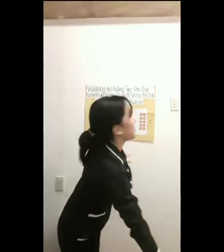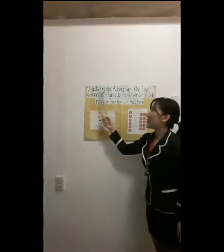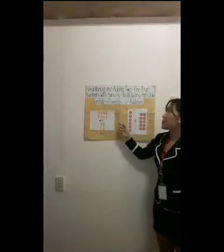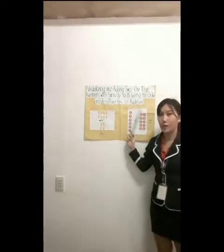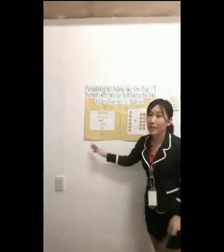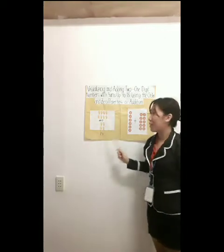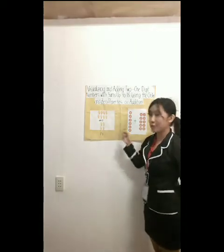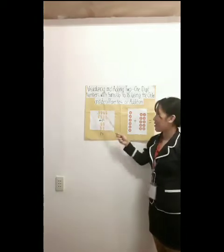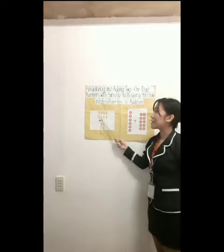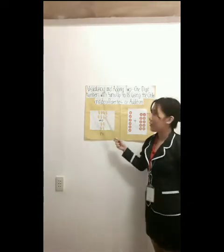Do you have any idea what our topic is today? Our topic today is: visualizing and adding two 1-digit numbers with sums up to 18 using the order and zero properties of addition. I have here an example. I have mangoes here. Can we count how many mangoes are in this picture? Let's start: 1, 2, 3, 4, 5, 6, 7, 8. There are 8 mangoes.